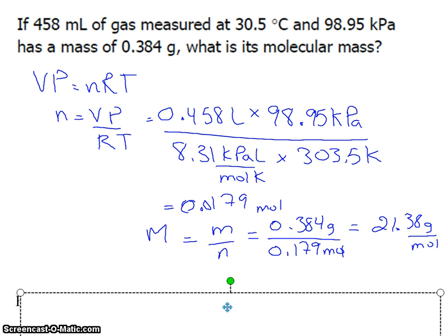To solve for molar mass, I take the mass of 0.384 grams divided by the moles that we found here, and I keep forgetting a zero there. And I get a molar mass of 21.38 grams per mole. So ideal gas law can be used for multiple reasons for solving for properties of gases.